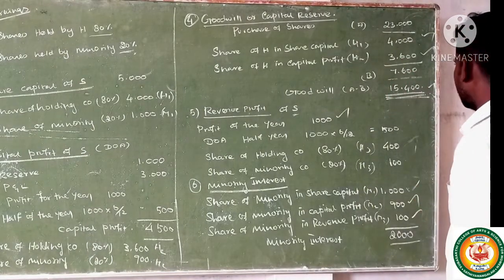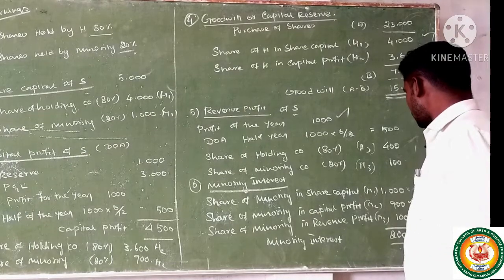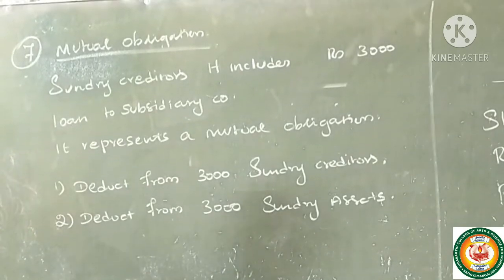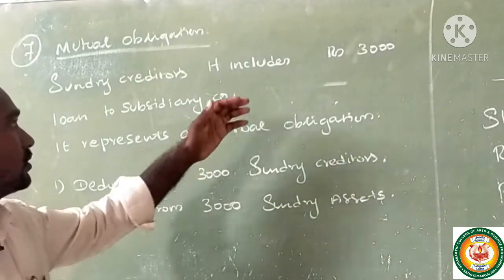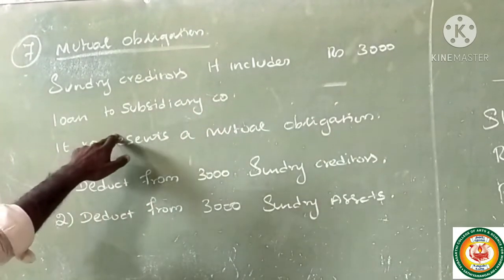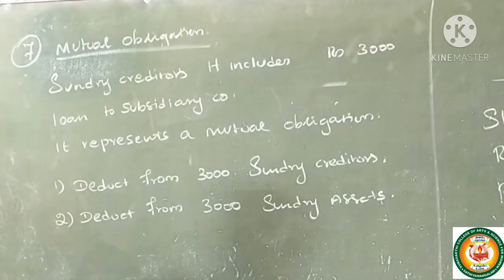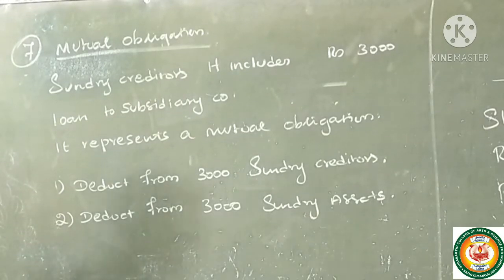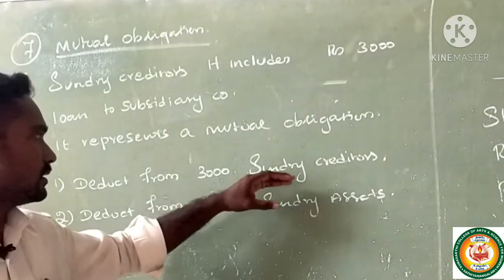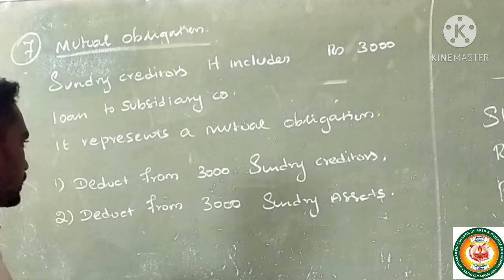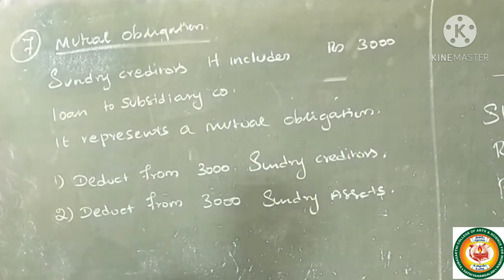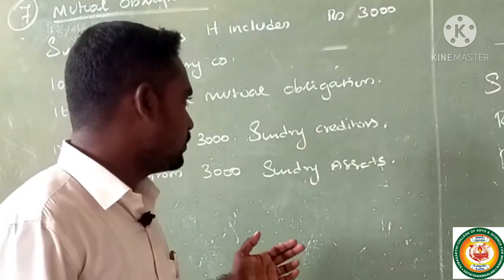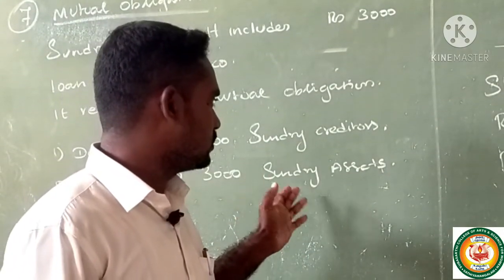Total minority interest is 2,000. Mutual obligation: sundry creditors of HL include Rs. 3,000 loan to subsidiary company. First, deduct Rs. 3,000 from sundry creditors; also deduct from sundry assets — the loan by H to S Limited.